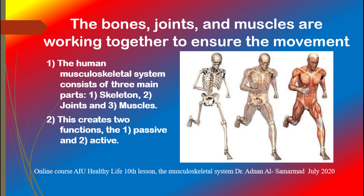And support others in leading a healthy life. The human musculoskeletal system consists of three main parts: the first one is skeleton, the second one is the joints, and the third one is the muscles. This creates two functions — the first one is passive, and the second one is active. The passive elements of the musculoskeletal system, such as bones and joints, are so-called because they cannot move by themselves. But the joints with the muscles can represent movement actions in order to be able to perform the active and passive function.